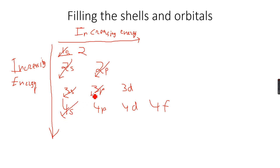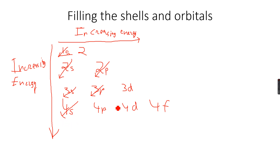You might be thinking: why did we not go from 3p to 3d — why did we go from 3p to 4s? We actually go diagonal. 1s, 2s — there was nothing diagonal there. Then 2p and 3s are diagonal, so we go directly from 2p to 3s. Then 3p and 4s are diagonal, so we go from 3p to 4s. The 4s orbital actually has lower energy than the 3d orbital, and that's why the 4s orbital fills first.